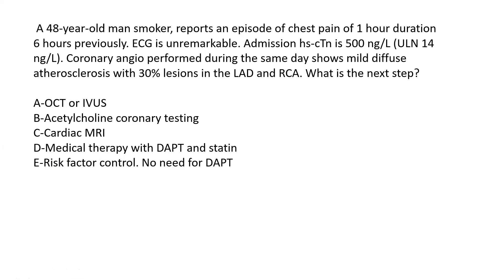All three — OCT/IVUS, acetylcholine testing, and cardiac MRI — may be performed in a variety of combinations, and it's not wrong to perform any one of them. The highest yield is cardiac MRI (C), second highest is OCT/IVUS (A), and third highest is acetylcholine testing (B). The best answer overall is C, but A is best in the immediate cath lab context.